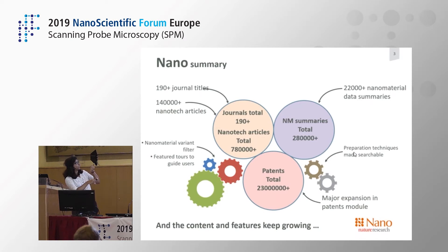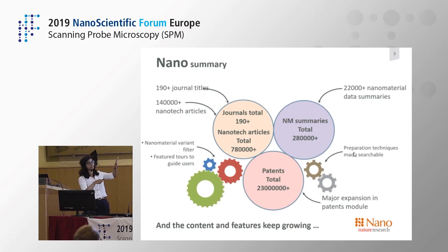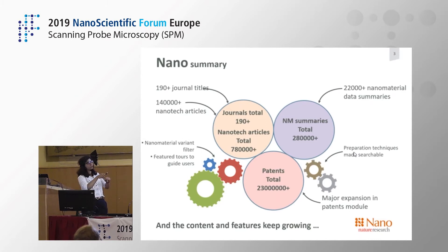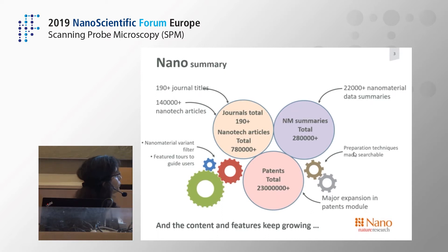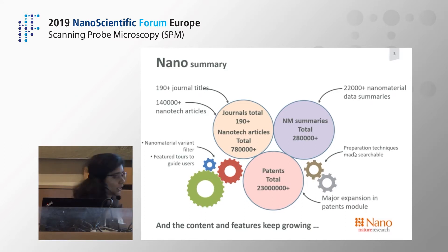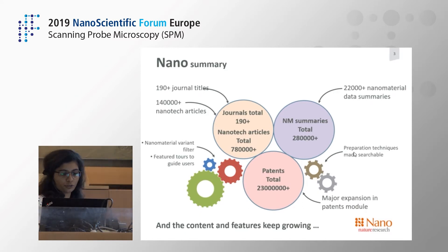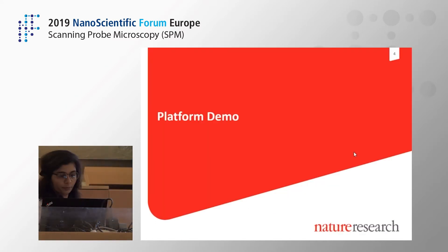The content can be understood in three parts. First, nanotechnology articles from more than 190 different journals, including other publishers. Second, nanomaterial summaries. And the third leg — a very important one — is patents. We have more than 23 million patents in the database. Now let's go to the platform.